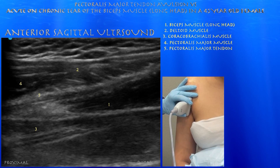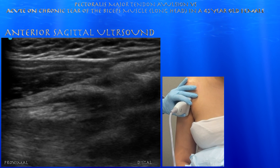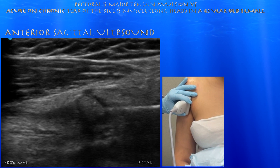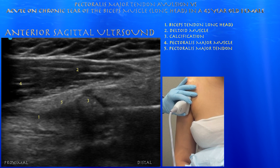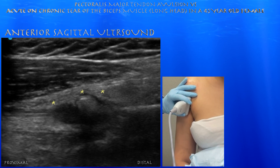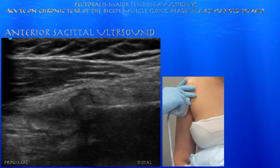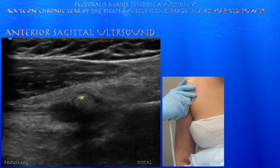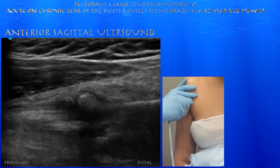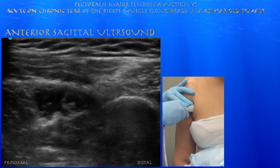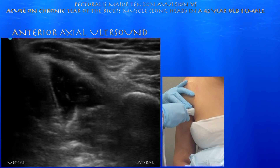Here's the biceps long head muscle in a sagittal plane. You can see the pect major muscle overlying it with the pect major tendon underneath it. Here's this calcium spot — it looks like it could have been an avulsion from the humeral shaft.